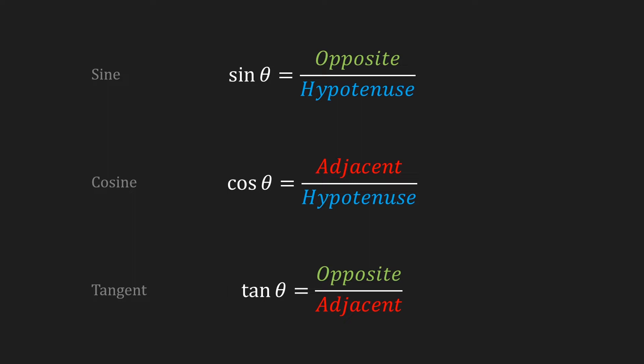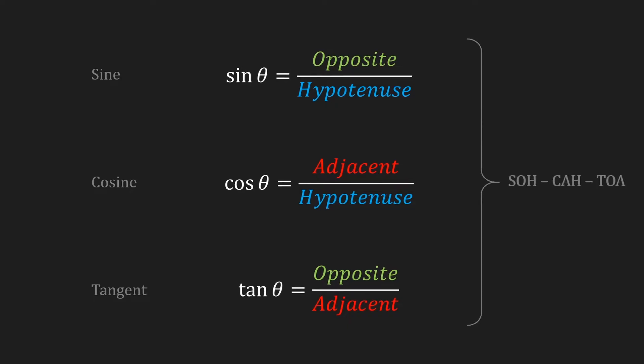Of course the same is true for the cosine and tangent. If you can't remember these formulas, then all you need to know is SOH, CAH, TOA.